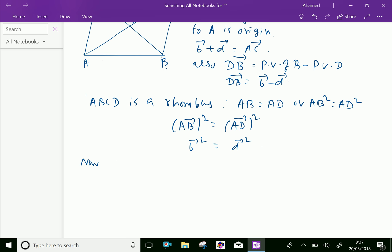Now, we can write vector AC dot vector BD equals, AC is B plus D, vector B plus vector D dot vector B minus vector D, which equals vector B squared minus vector D squared.